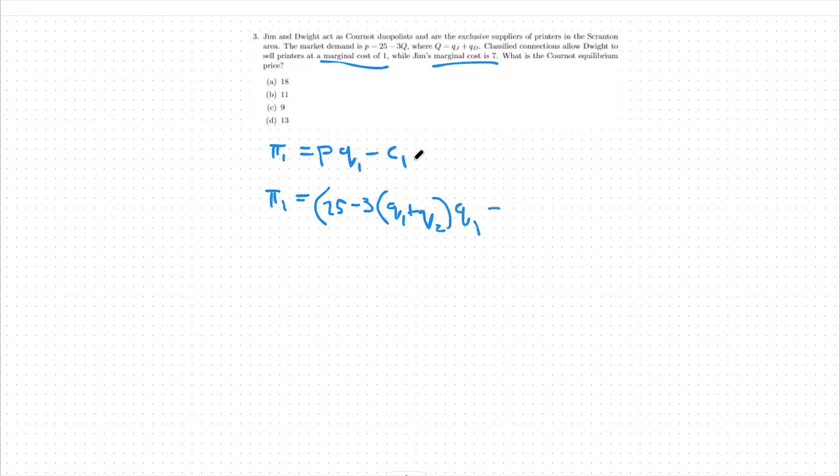Then we're going to expand this out also to have the q1 still involved there, and then minus c1, our cost will be our marginal cost of firm 1, which is $1, times the amount of units that firm 1 produces. So $1 per unit, their cost is 1 times q1. From there, it's a bit of math simplification. So we can see that we have 25 minus 3 times q1 plus q2. So I'm going to first expand that out and say 25 minus 3q1 minus 3q2 times our q1 still minus q1. So we're left with profit 1 equals 25 minus 3q1 minus 3q2 times q1 minus q1 as our new profit function.